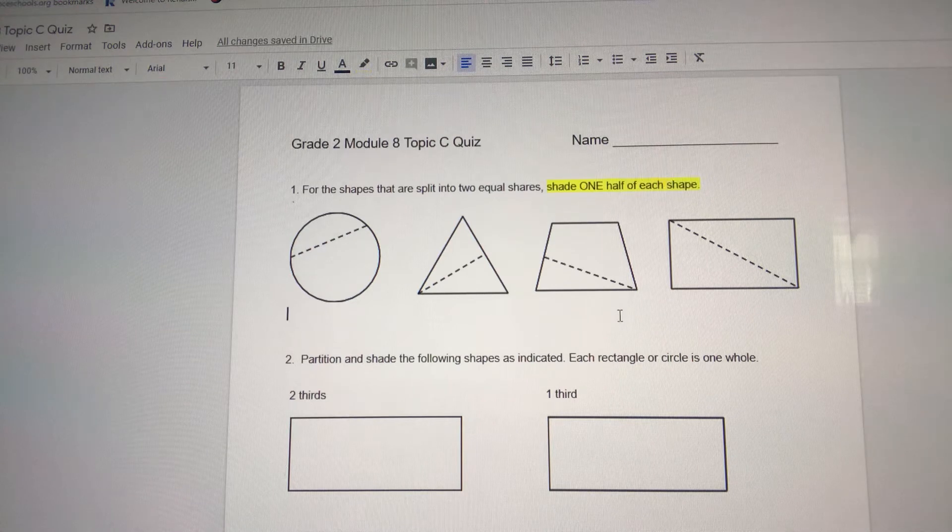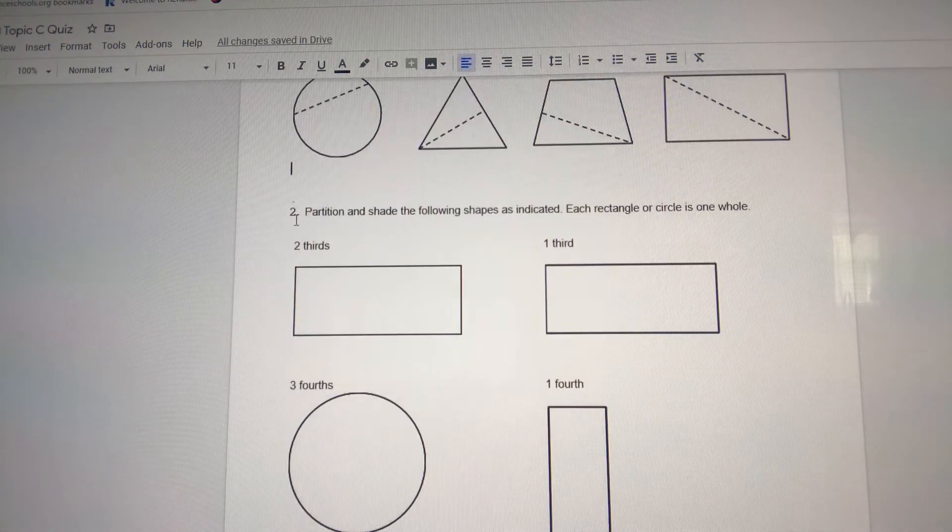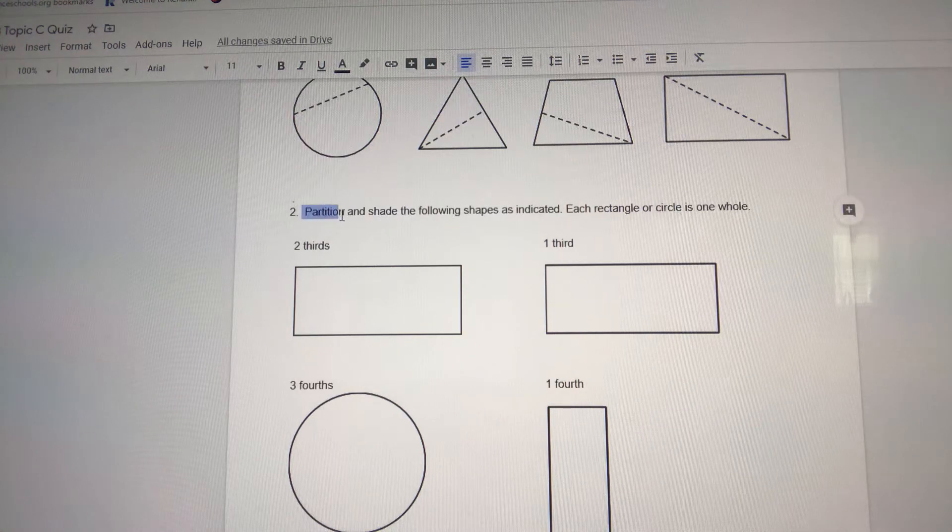You have to do all of this test in your notebook, take a picture of it, and send it to me on class dojo. For question two, it says partition. Partition just means break into equal pieces, like the word part.